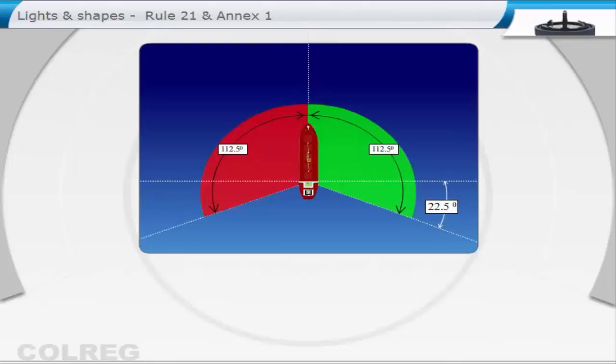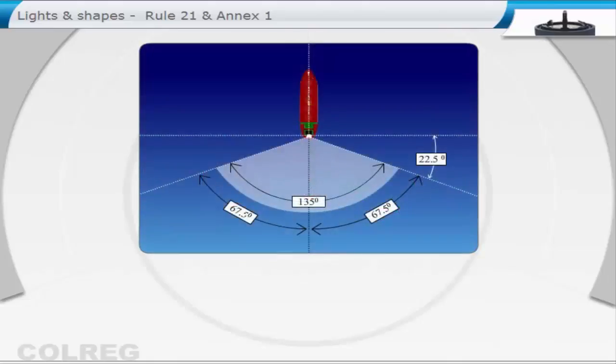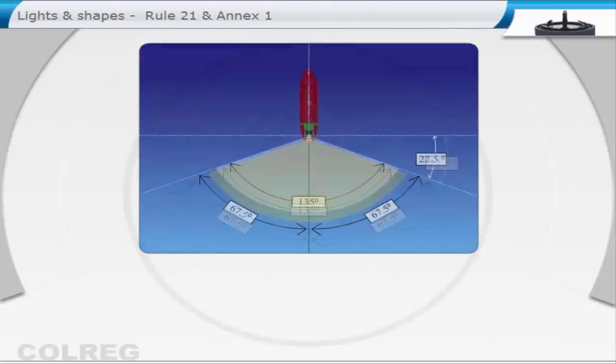These are specially screened to prevent being seen across the bow, and should be seen lower than the lowest masthead light. Stern light is a white light visible at 67.5 degrees on both sides of the stern. This is to where the side lights finish.